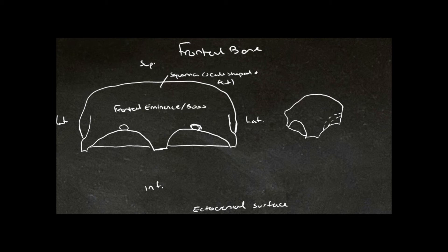And we have two arches over the orbits called superciliary ridges or superciliary arch.